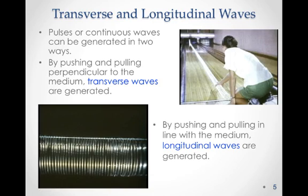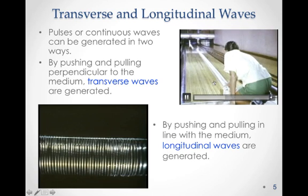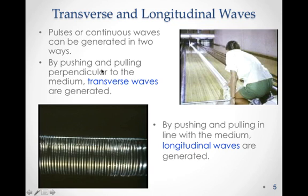Another way we categorize waves, or types of waves, is through the way we disturb a medium. If we disturb a medium perpendicular to its propagation, as shown in this particular video, the wave was disturbed this way, but the wave propagated down the slinky that way, perpendicularly, then we call that a transverse wave.